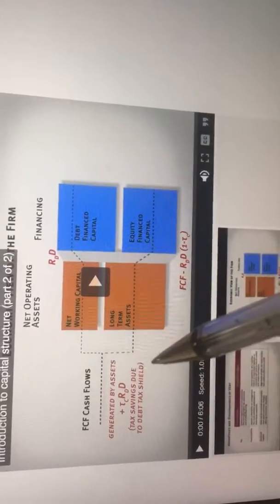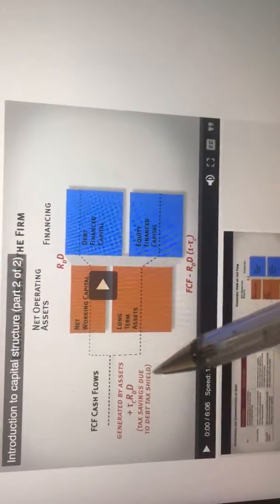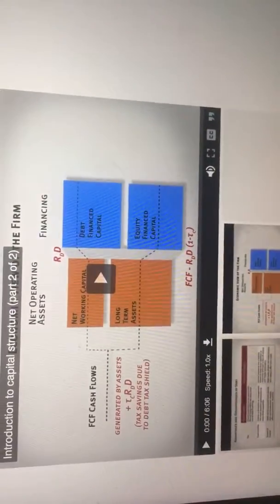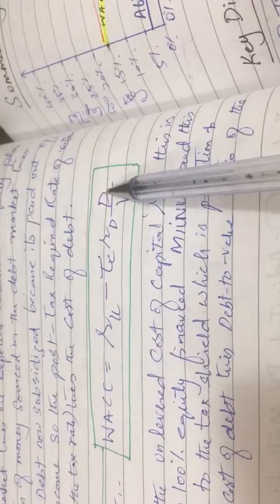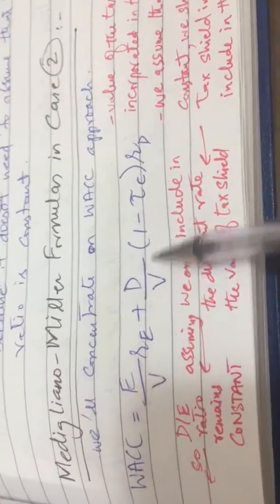will be reduced and hence the present value of the firm will be increased. So why are we only incorporating this? Why not the debt-to-value ratio? Because we know that this entire thing, if